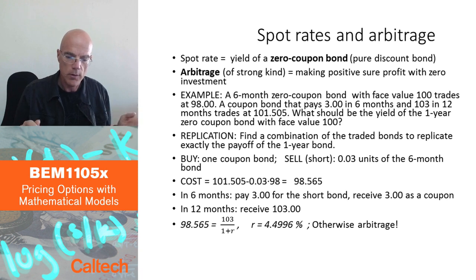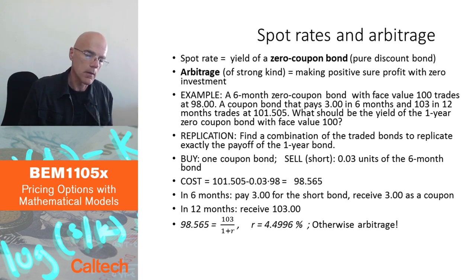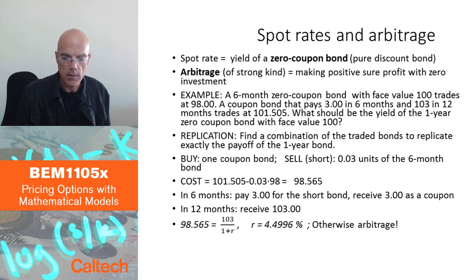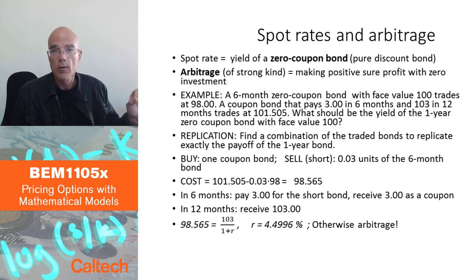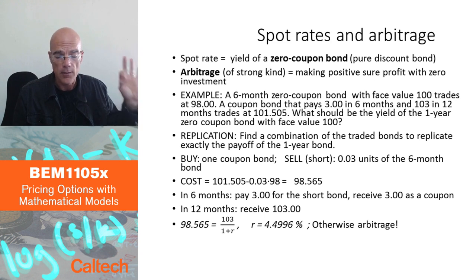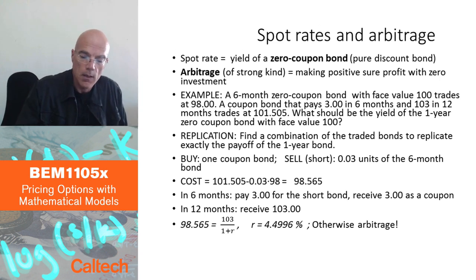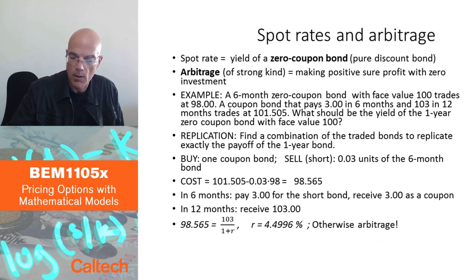The value must be exactly equal to the cost of the replicating portfolio. This is the main economic message of the whole course. Everything else involves different assets and different mathematical models, but in terms of pricing, the core idea is always: the value equals the cost of replication.